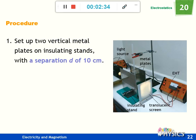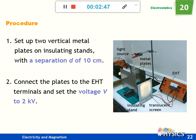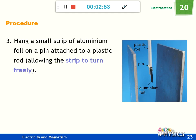First, we set up vertical metal plates, similar to vertical parallel plates. The separation, which we call d, is 10 cm, which means 0.1 m. Connected to EHT at very high voltage, 2 kV. We have an aluminum foil strip attached to a plastic wall. This plastic wall makes it an isolated system, isolated from other objects, so the charge on it will remain here.